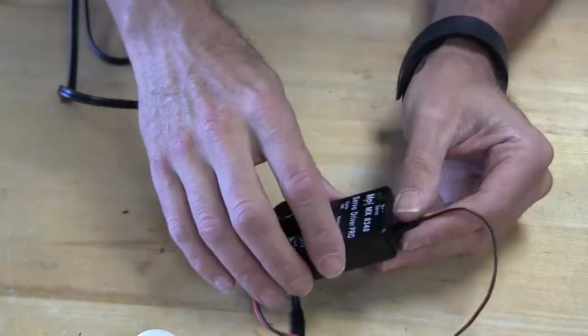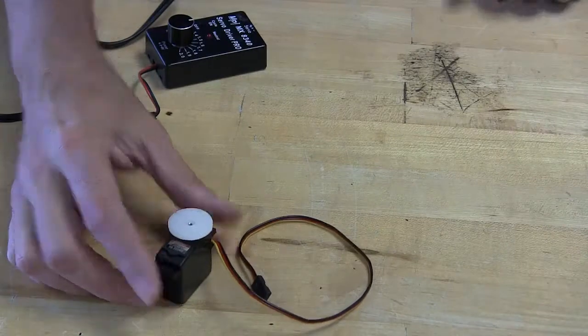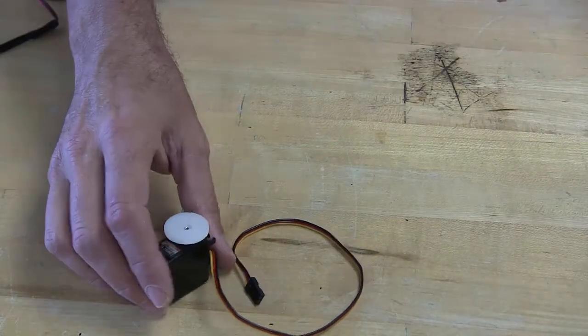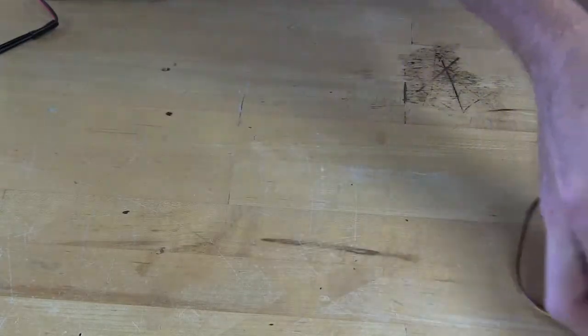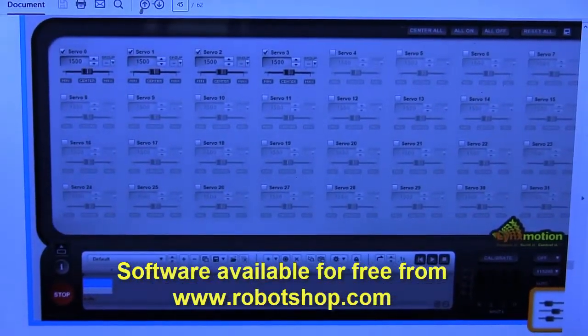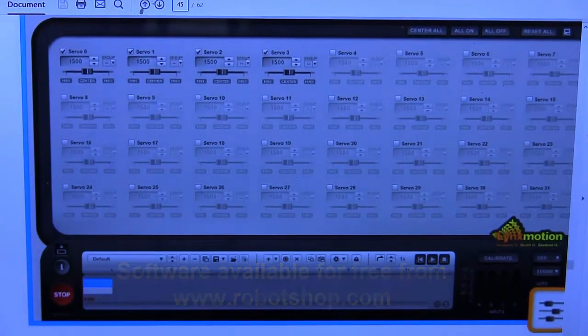If you want to do it with software, wire all your servos to the SSC32, plug it in, and use the SSC32 servo driver software to do the same thing. You can drive all the servos at the same time and adjust them manually right on the robot.